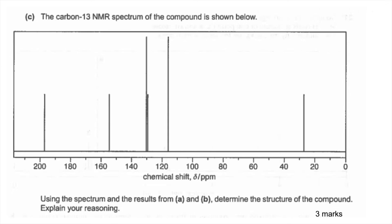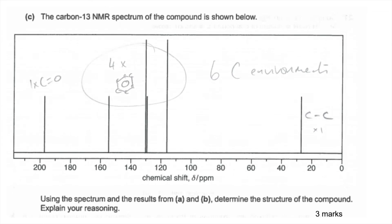For part C we have the carbon-13 NMR spectrum and we're going to come up with a structure for the compound. The first thing I would do is annotate that spectrum. The fact that there are six peaks means there are six environments. Using the data sheet: we've got one C-C environment, one C=O environment — remember we've already established it's a ketone — and four peaks in the benzene ring region, so there must be four environments in the benzene ring.